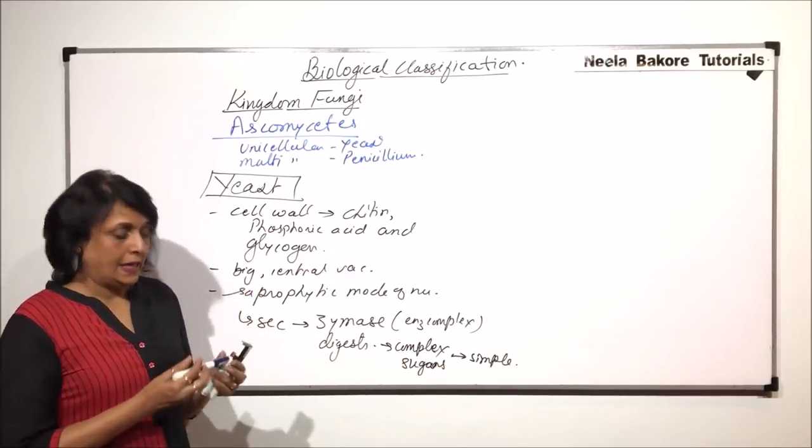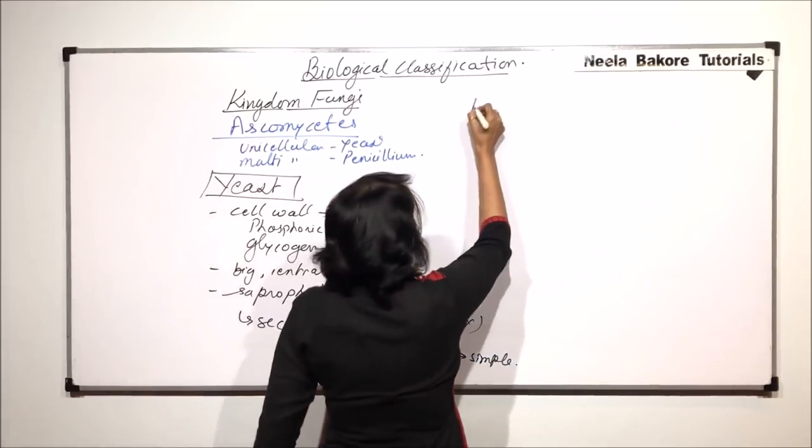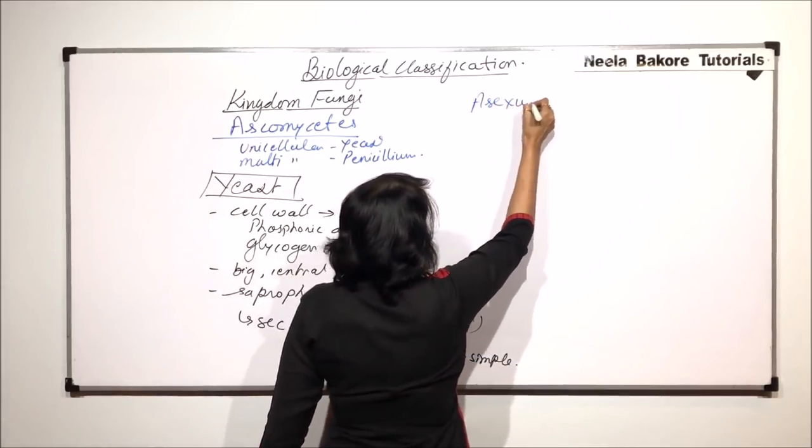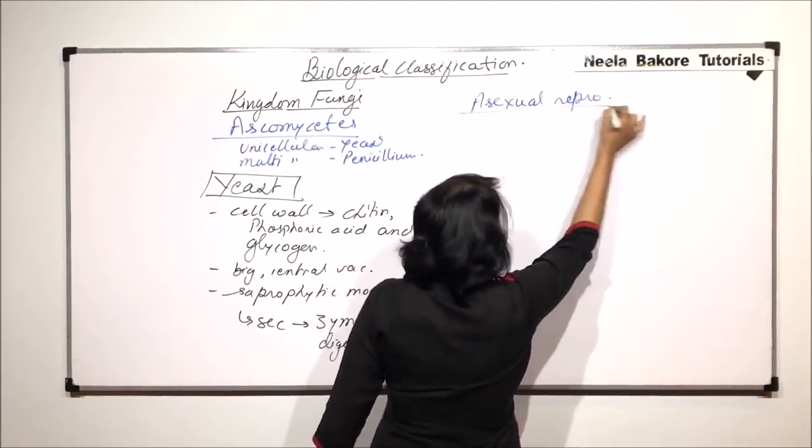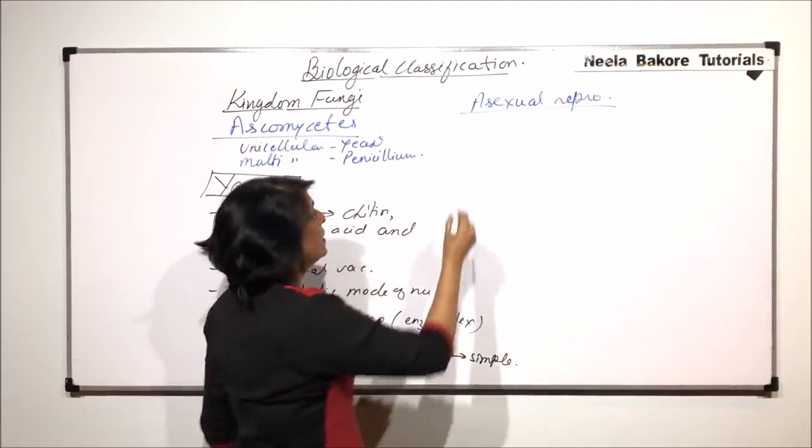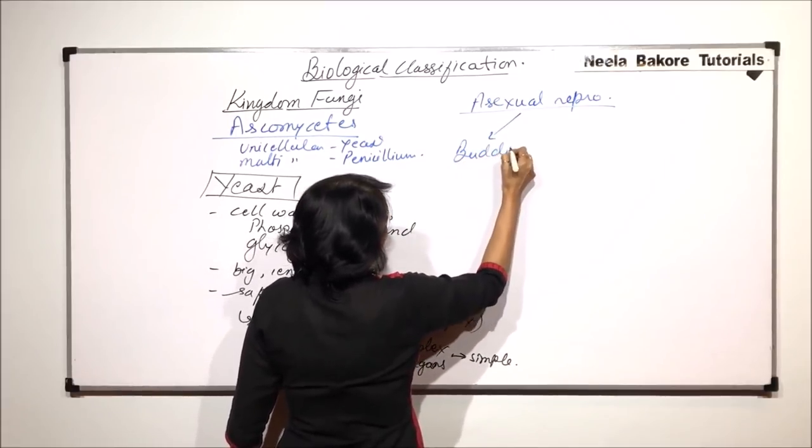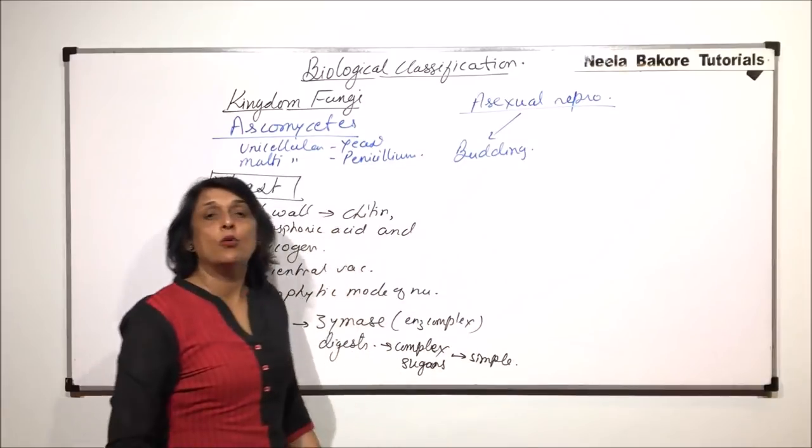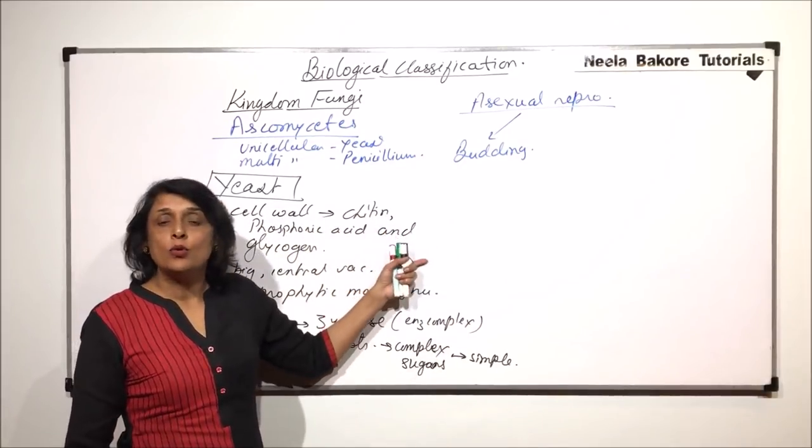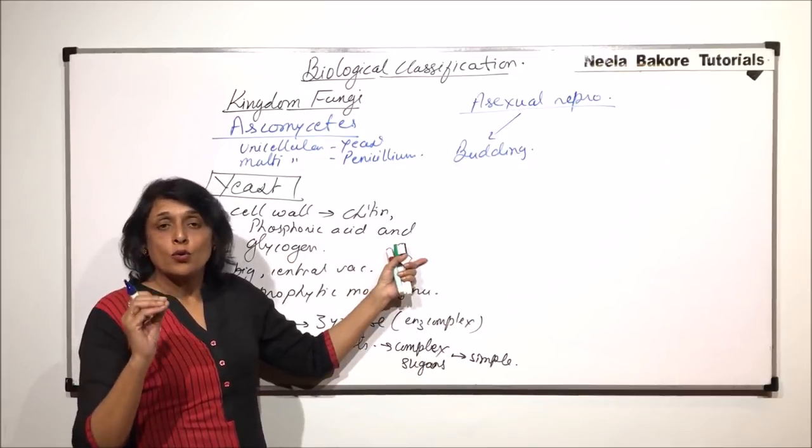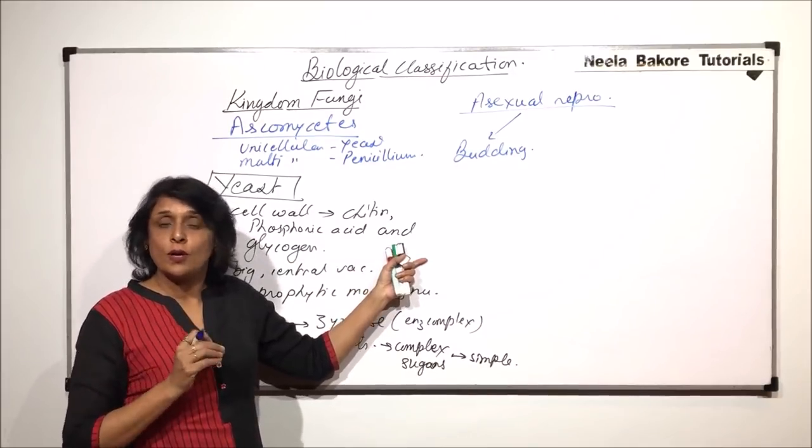In case of yeast, both asexual and sexual reproductions are seen. So, asexual reproduction, it takes place mainly by two methods. One is budding. And in case of budding, a tiny outgrowth is seen on the parent cell. And this outgrowth which we call the bud, grows till a size where it is able to survive on its own.